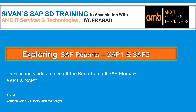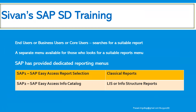Let us see what exactly SAP1 and SAP2 do. End users, business users, or core users will always look for the suitable report and directly extract data by typing their particular transaction code in the SAP Easy Access menu. SAP has provided dedicated reporting menus: SAP1 transaction code, which is SAP Easy Access report selection — a classical report selection — and SAP2 transaction, which takes us to the SAP Easy Access info catalog, which is LIS or logistics information system reports. These two menus help users achieve their report-related information needs.